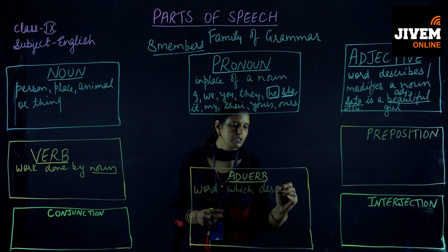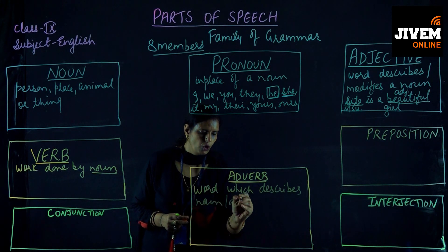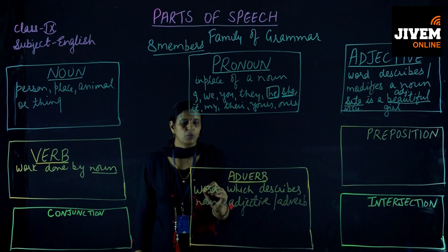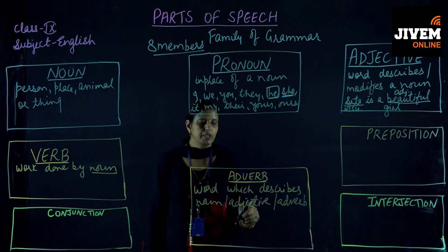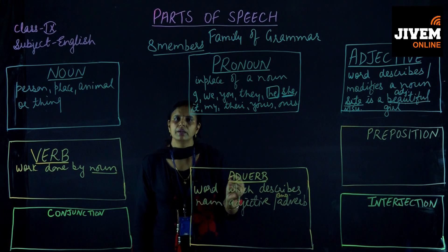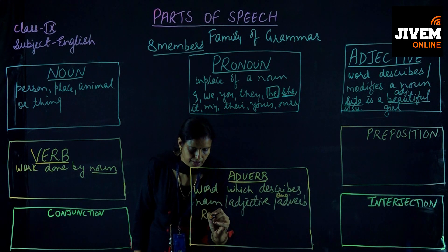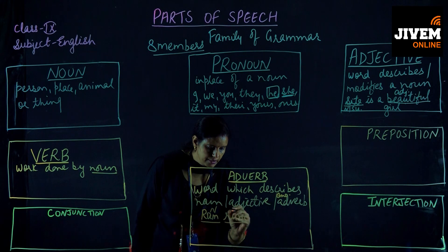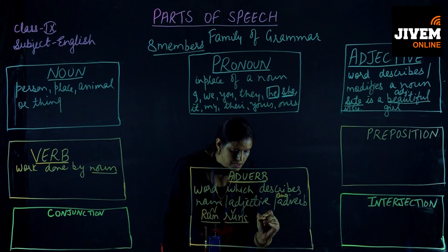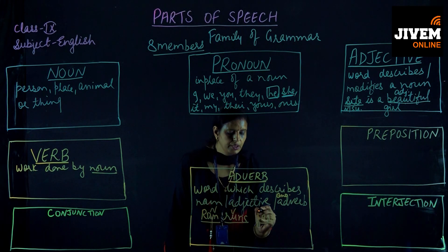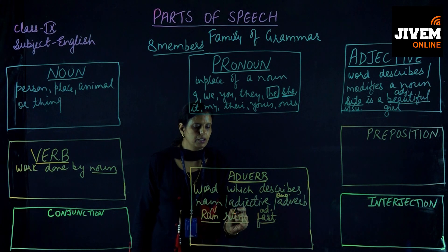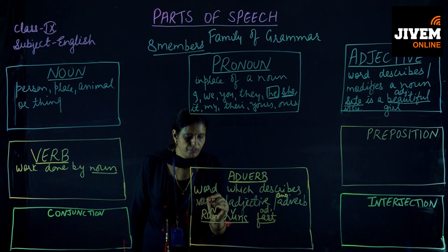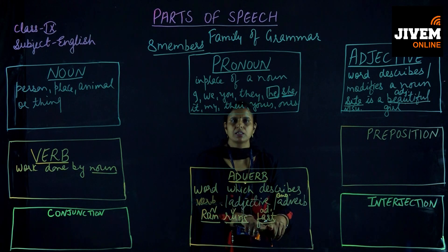Next is adverb. An adverb is a word which modifies or describes a verb, adjective, or another adverb. For example: 'Ram runs.' Here 'Ram' is the noun and 'runs' is the verb. If we say 'Ram runs fast,' then 'fast' is the adverb because it is modifying the verb 'runs.' A word which describes a verb, adjective, or another adverb is known as an adverb.